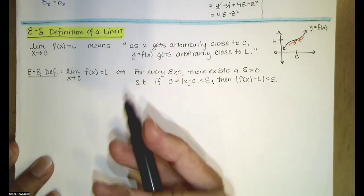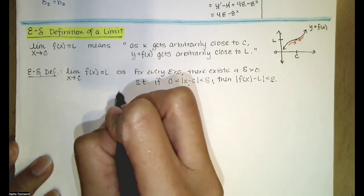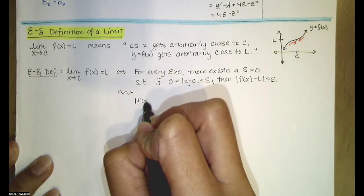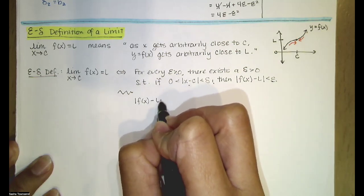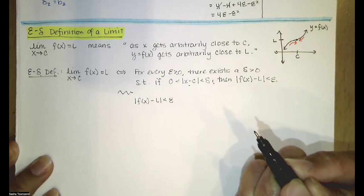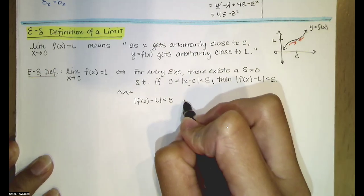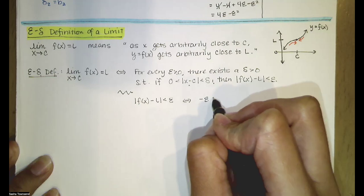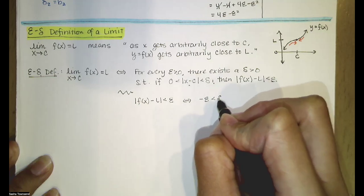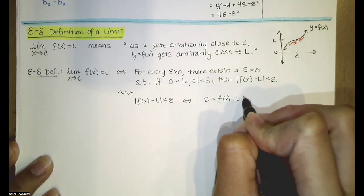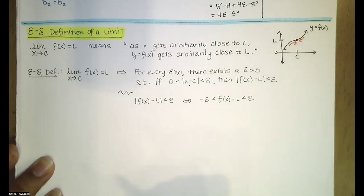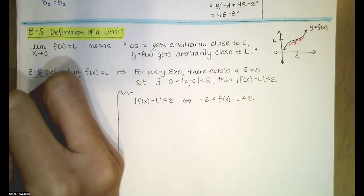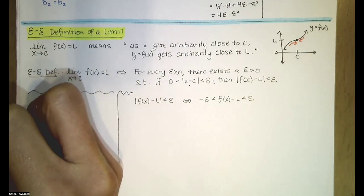Let's look at each of these pieces separately. The absolute value of f(x) minus L being less than epsilon means that f(x) minus L is between negative epsilon and epsilon. We know that because we understand absolute value inequalities.